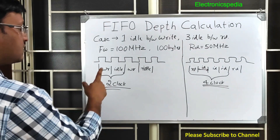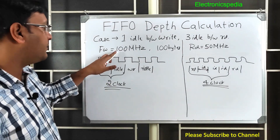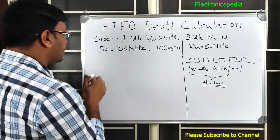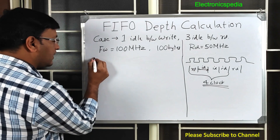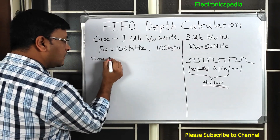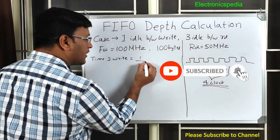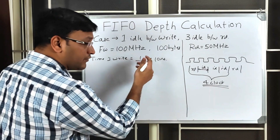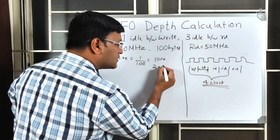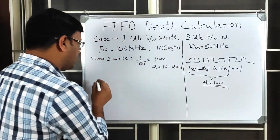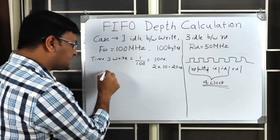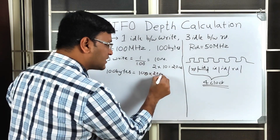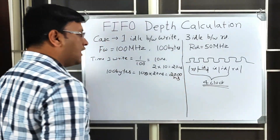The frequencies remain the same: write at 100 MHz, read at 50 MHz. Time for one write = 1 / 100 MHz = 10 ns. With two clock cycles per write, that becomes 20 ns per byte. For 100 bytes: 100 × 20 = 2000 nanoseconds total write time.